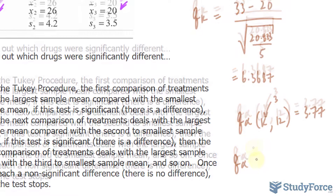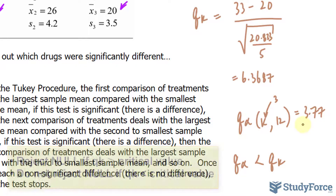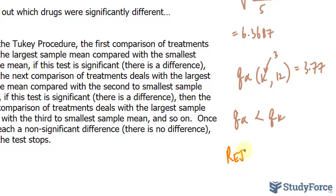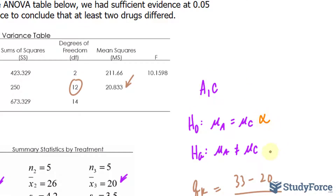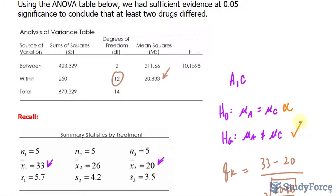Q alpha of 3.77 is less than Q sub K of 6.3687. When Q sub K is greater than Q alpha, we reject the null hypothesis in favor of the alternative. So we reject the null here. This means we have to continue another cycle in the Tukey procedure. Now we compare the largest mean with the second smallest, which means we'll be comparing drug A with drug B.